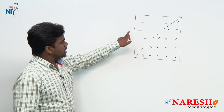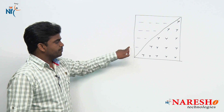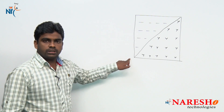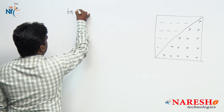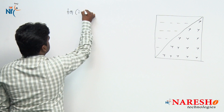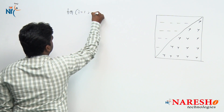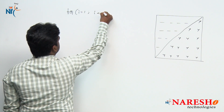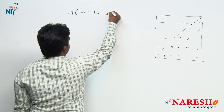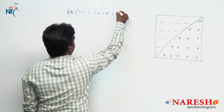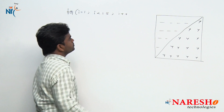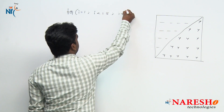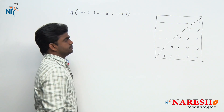How many rows are present? Total 5 rows are present. i value starts with 1, i is less than or equals to 5, i plus plus.